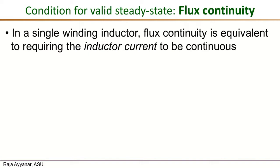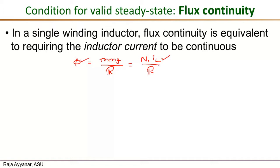For a single-winding inductor, as studied in non-isolated converters, flux continuity is synonymous with inductor current continuity. In a single-winding inductor, the flux φ in the core equals MMF over reluctance, which is N₁ times the inductor current iL divided by the reluctance. So if iL is continuous, and N and reluctance are constant, φ will also be continuous. These two requirements are synonymous for the single-winding case.